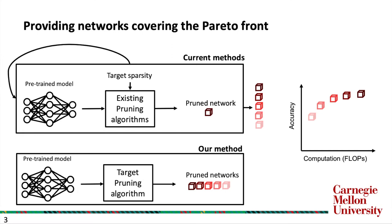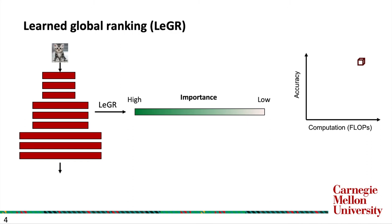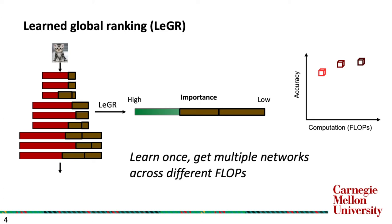To achieve this goal, we propose Learned Global Ranking, or Ledger. The key idea is to rank filters across different layers using a global importance metric, such that filter pruning at different target sparsity can be done efficiently by thresholding the bottom-ranked filters. The benefit of such a formulation is that one can obtain multiple pruned networks by learning the ranking once.